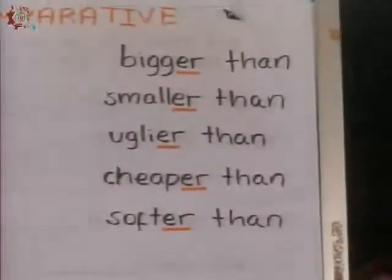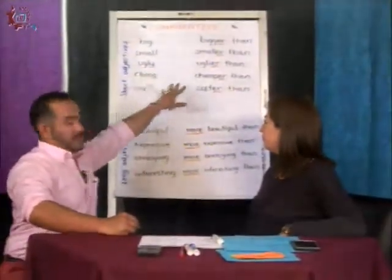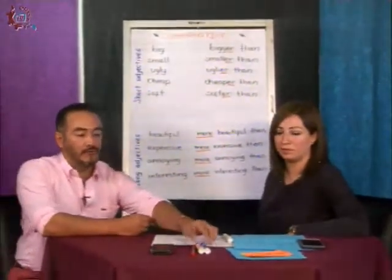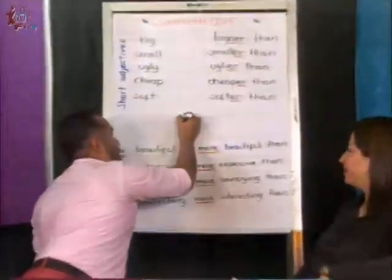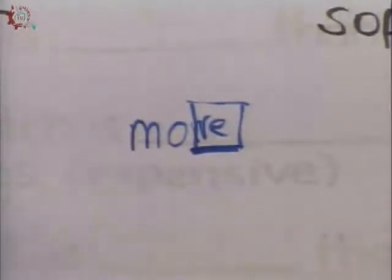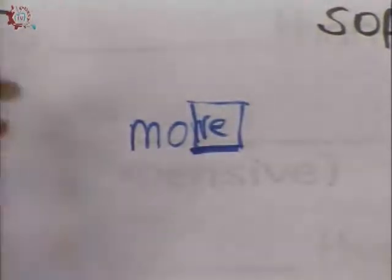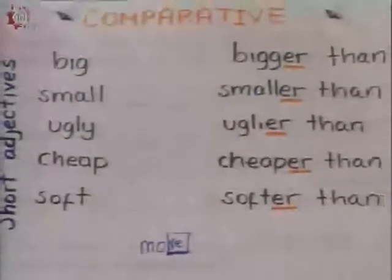Y si ustedes están preguntando, ¿de dónde viene el ER? Si recordamos en sus anotaciones, la palabra clave era 'more'. La palabra more significa más. Cuando la involucramos directamente en el adjetivo, ya no dice barato — ahora ya dice más barato que. No lo vayan a olvidar de dónde proviene el ER.